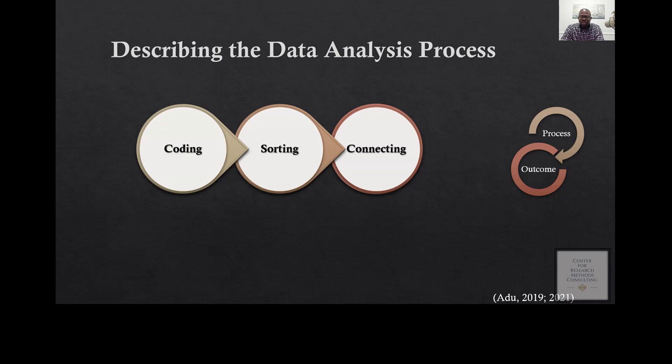For the coding process, people want you to describe step-by-step how you identified significant information, how you assigned labels to them, and what coding strategy you used. You're not only talking about the process, you have to also talk about the outcome. At the end of the coding process, what was the outcome? Maybe you came up with 20 codes representing research question one and maybe 15 codes addressing research question two. People want to know the action that you took and also the outcome.